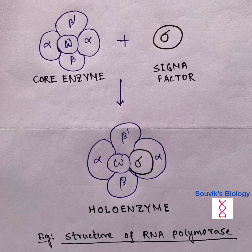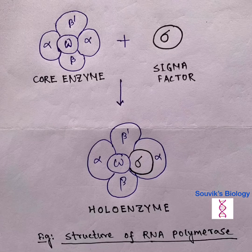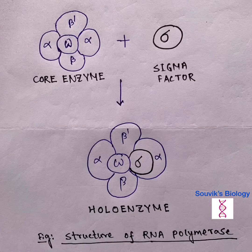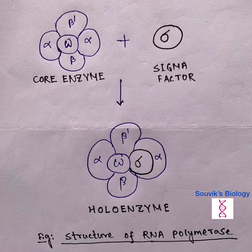Transcription means formation of mRNA from DNA. RNA polymerase is composed of mainly two parts: the first part is the core enzyme, and the second is the sigma factor. The core enzyme has some subunits — one omega subunit, two alpha subunits, one beta subunit, and one beta-dash subunit.